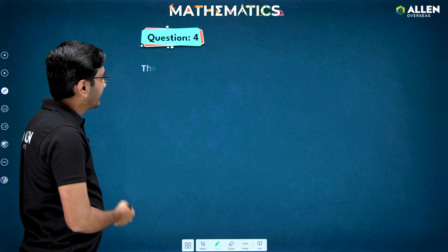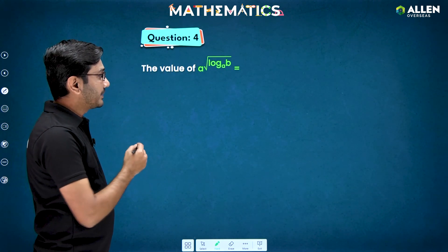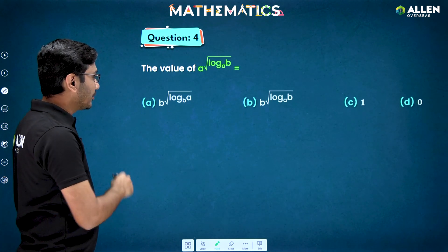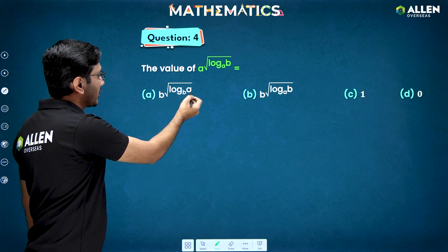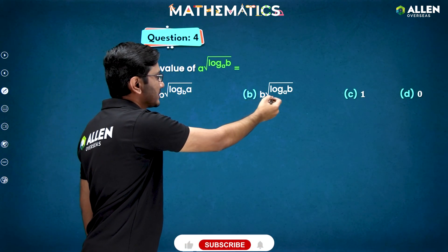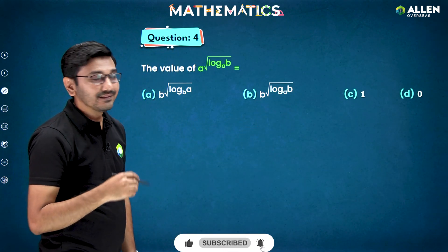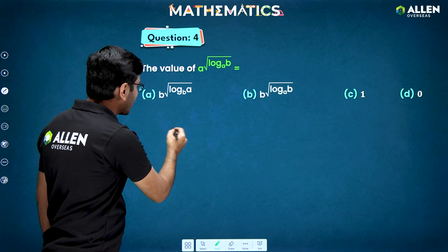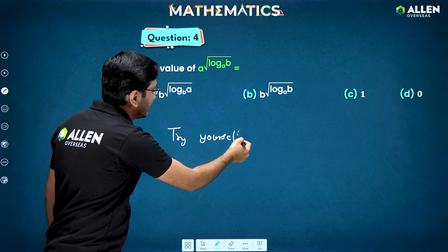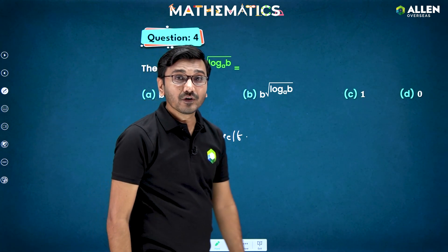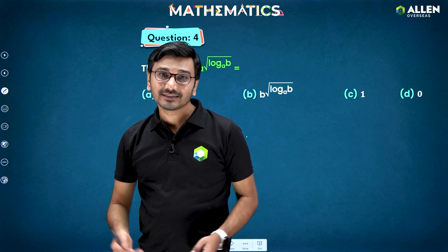Now just see another question for your homework. The question is: what is the value of a raised to the square root of log of b to the base a? The options are: first, b raised to square root of log of a to the base b; second, b raised to square root of log of b to the base a; third, 1; and last, 0. Try this yourself and don't forget to give your answers in the comment box so we can tell whether your answers are right or wrong.